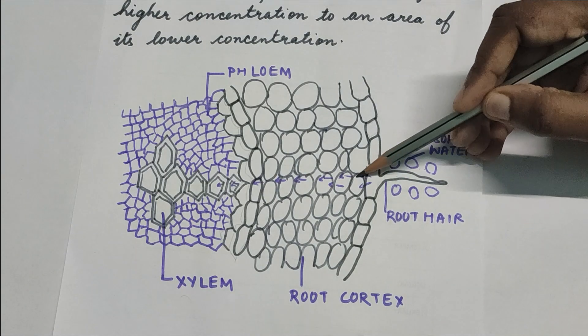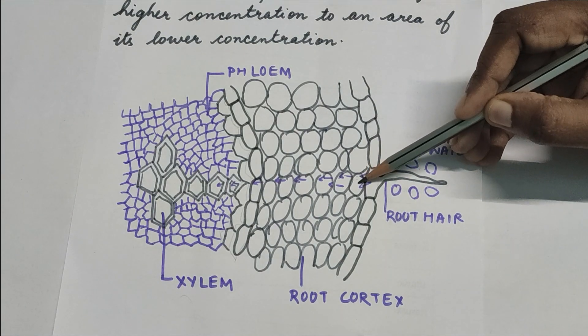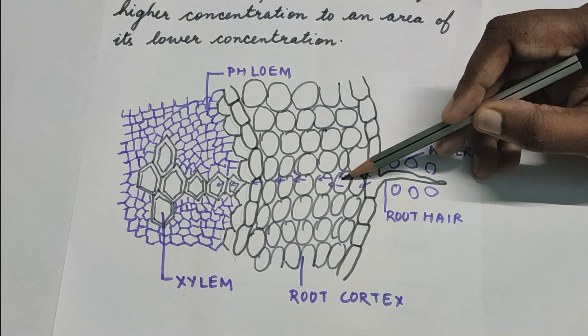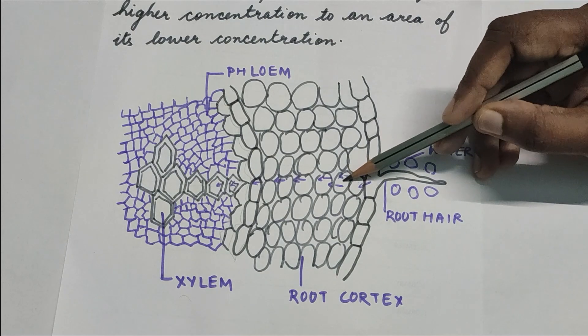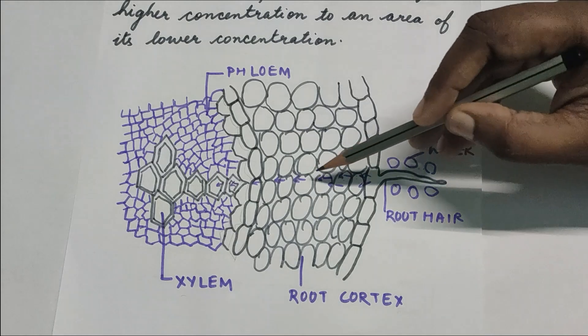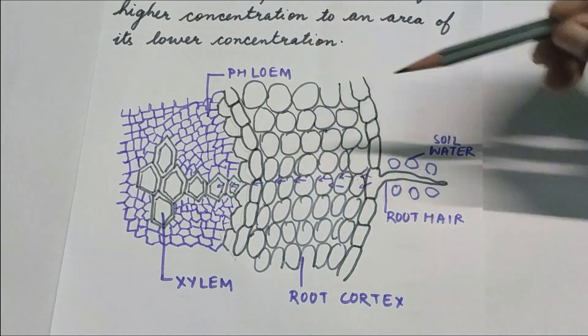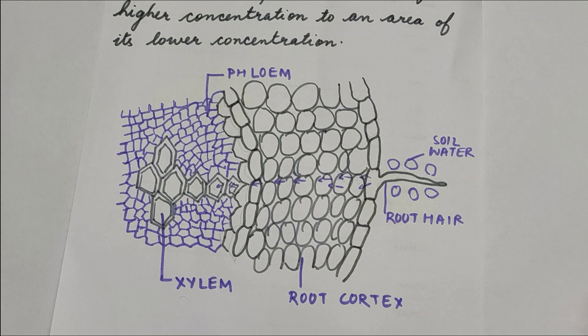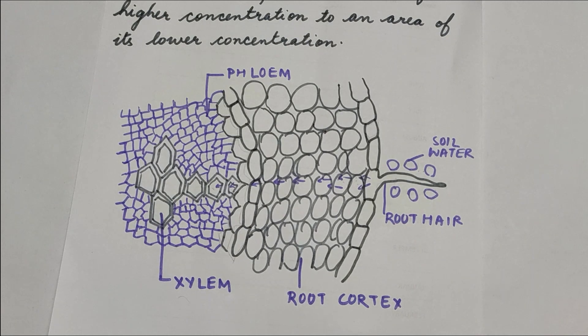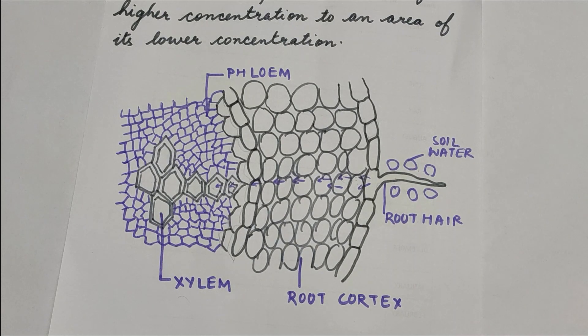The concentration in the root hair increases, then it will go to the next cell, and then move to the next cell which has lower concentration. Like that it is going to move up till the xylem, and inside the xylem water travels upward from one cell to another against the force of gravity.